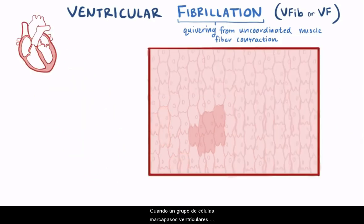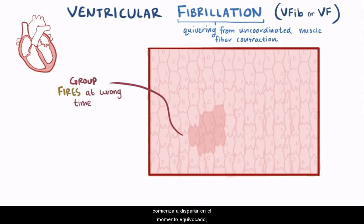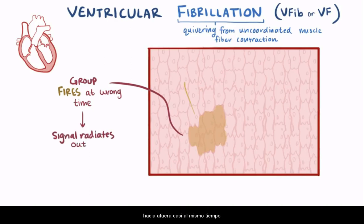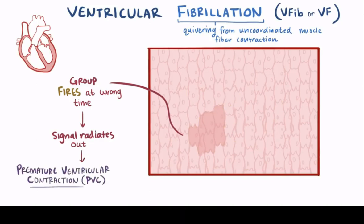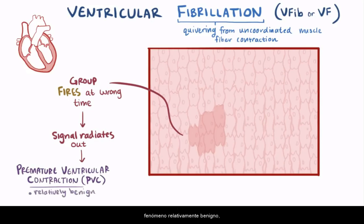When a group of ventricular pacemaker cells starts firing at the wrong time, if the surrounding cells have the same or nearly the same properties, that signal radiates outward at almost the same time. And the ventricles contract — this is called a premature ventricular contraction, or PVC — which, although not the norm, is a relatively benign phenomenon and can even be seen sometimes in otherwise healthy hearts.